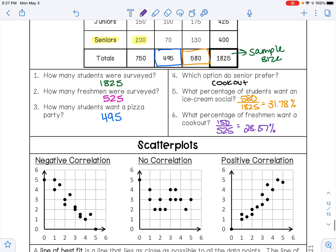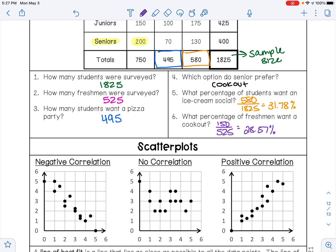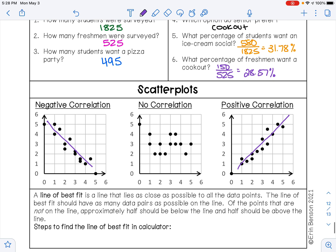We also learned about scatter plots. So when you have a negative correlation, if you were to draw a line of best fit, it would have a negative slope. No correlation means the data is kind of all over the place, nothing really is lining up to be either positive or negative. And then positive correlation, if we were to draw our line of best fit, we would have a positive slope.